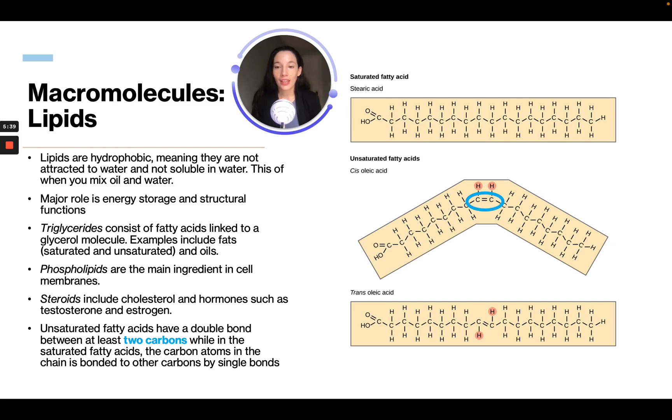Unsaturated fatty acids have a double bond between at least two carbons, while saturated fatty acids, the carbon atoms in the chain, are bonded to another carbon by a single bond. Saturated fats have all these carbons connected with one bond. Unsaturated fats have this double bond between two of the carbons. That is what makes them different.